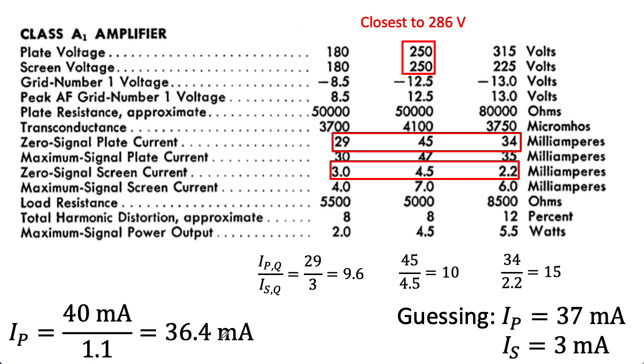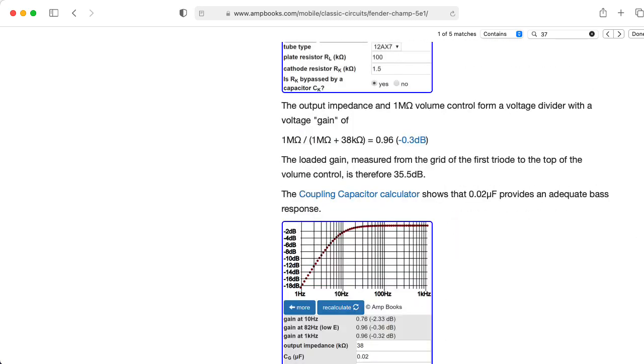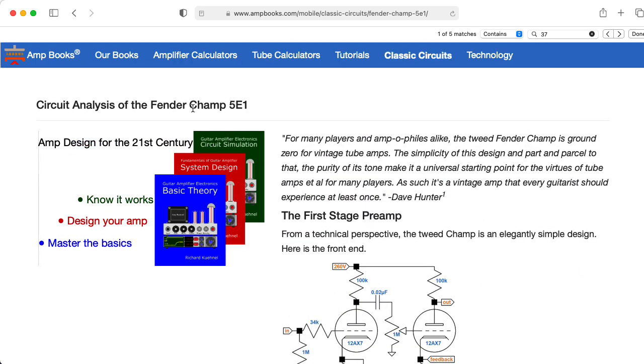And the main reason I wanted to go through all the effort to justify that fudging was that Richard Kuehnel uses a figure of 37 milliamps for the plate bias current in his excellent web page that analyzes the Fender Champ. And I wanted to stay consistent with his work.